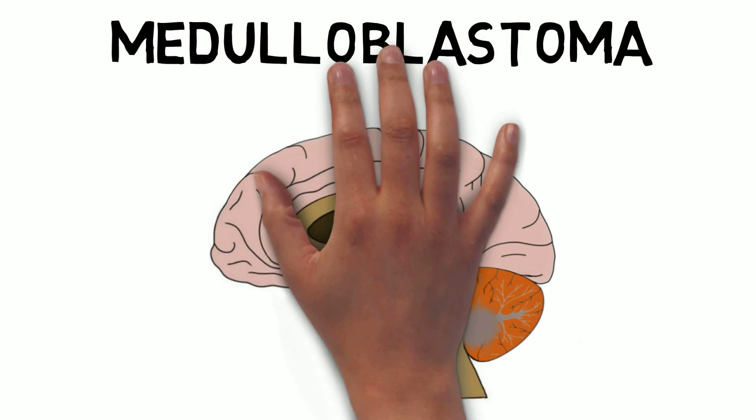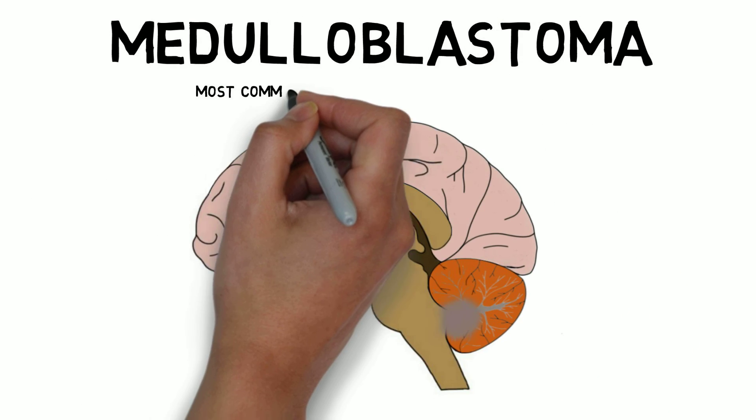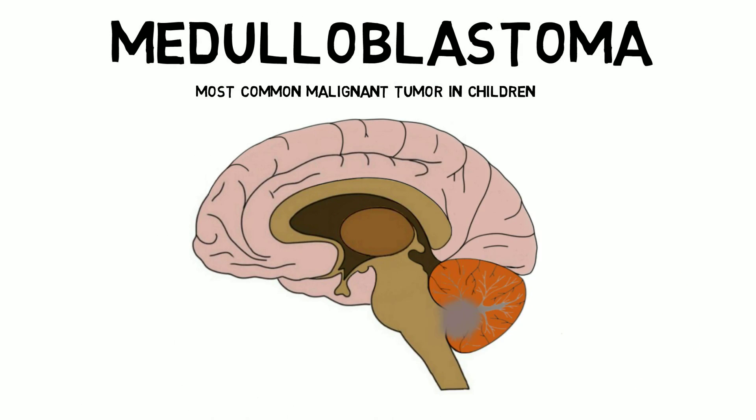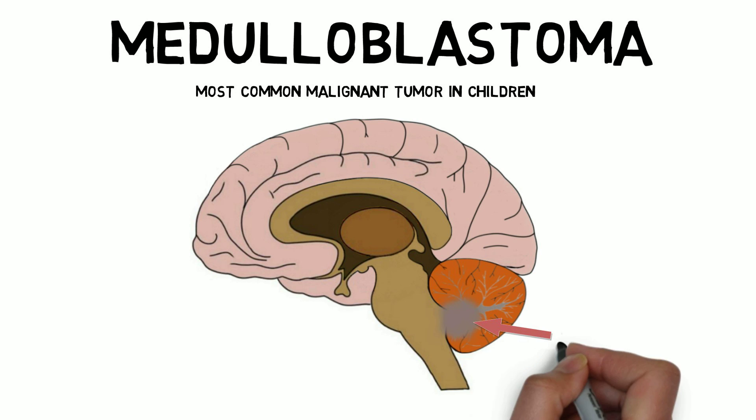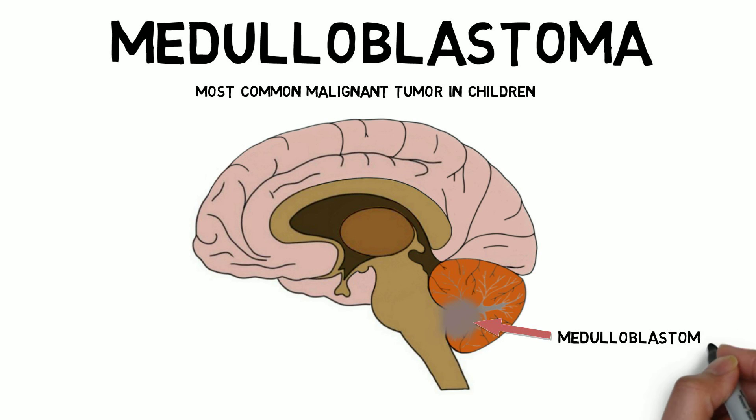Medulloblastoma is the most common type of malignant tumor in children. Medulloblastomas typically begin near the fourth ventricle, between the brainstem and the cerebellum.